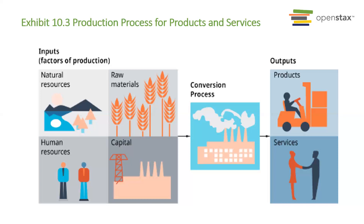And then once you go through the process of making that product, you have the outputs — the final product of that 7up that's going to go out to the stores and into the market. In the service industry, the resources that you utilize and the capital that you have go toward giving services to a consumer. For example, real estate is a service that real estate agents provide in terms of helping a client either sell their home or help a buyer buy a home. That takes a lot of their resources and time to provide their expertise and knowledge to deliver that real estate service.